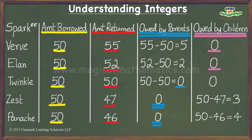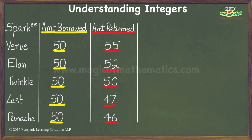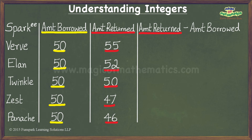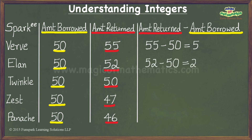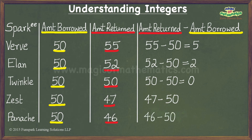To merge the columns, let us first erase both of them and introduce a column titled Amount Returned minus Amount Borrowed, with the intention of calculating the excess of the amount returned over the amount borrowed. In the case of Verve, the entry would be 55 minus 50 which equals 5 sparks. For Elan, 52 minus 50 equals 2 sparks. For Twinkle, 50 minus 50 equals 0 sparks. However, in the case of Zest we get 47 minus 50, and for Panache we get 46 minus 50 — and we know these expressions don't have a result in the world of whole numbers.